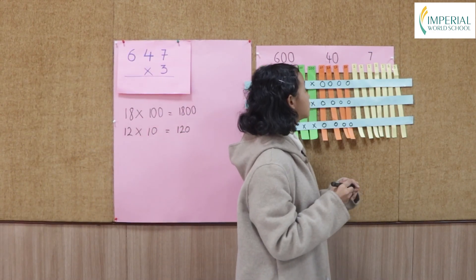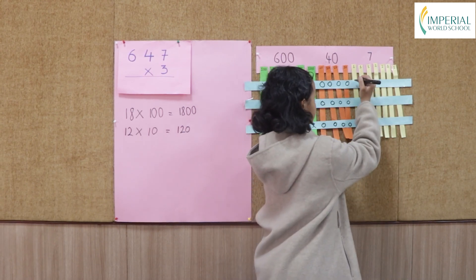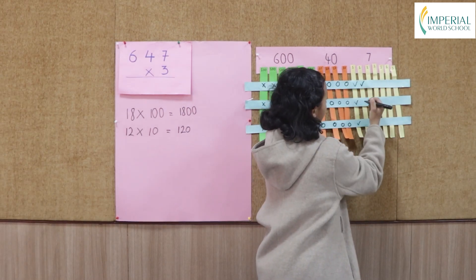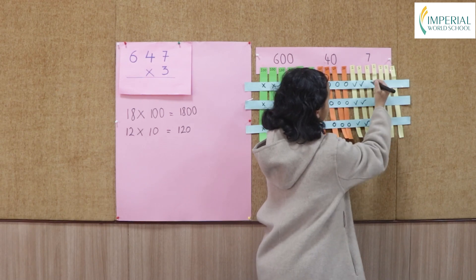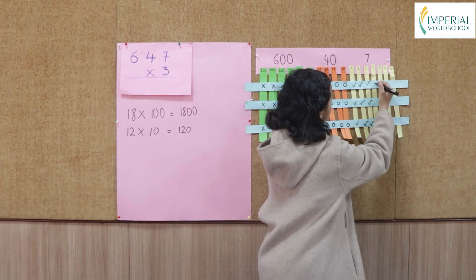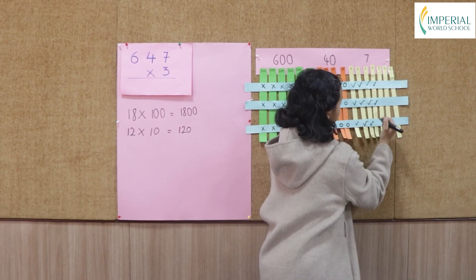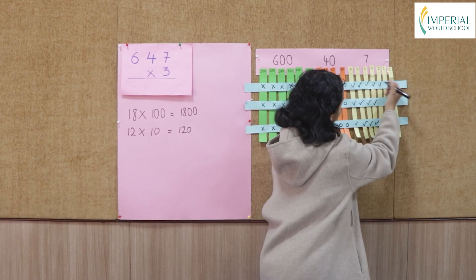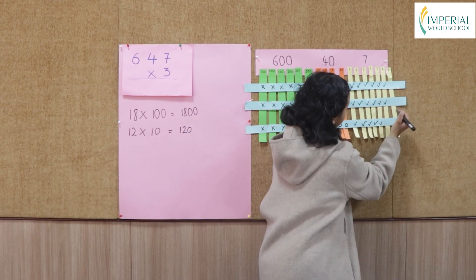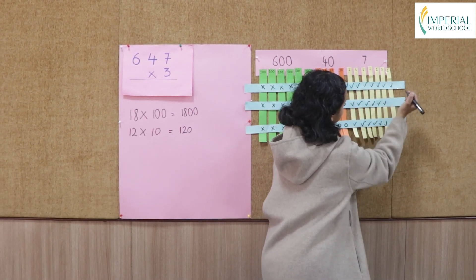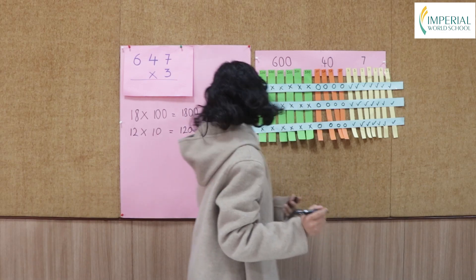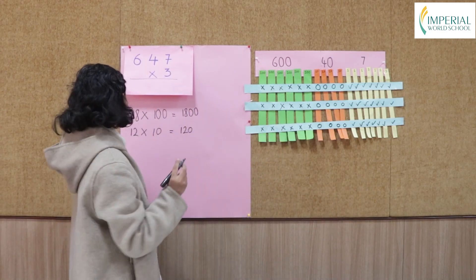Now let's move on to 1s. 1, 2, 3, 4, 5, 6, 7, 8, 9, 10, 11, 12, 13, 14, 15, 16, 17, 18, 19, 20, and 21. There are 21 intersection points. 21 times 1 equals to 21.